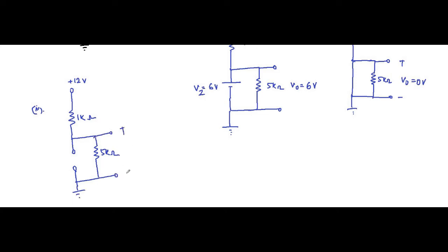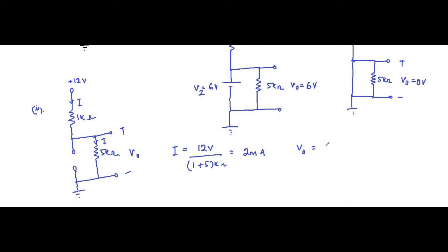When it is open circuited, we determine the current flowing through the circuit. The current flowing is equal to 12 divided by 1 kilo ohm plus 5 kilo ohm, which is equal to 2 milliampere. The output voltage is this current multiplied by the 5 kilo ohm resistor — that is 2 milliampere into 5 kilo ohm, which is equal to 10 volt.